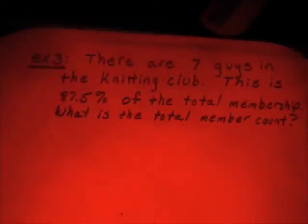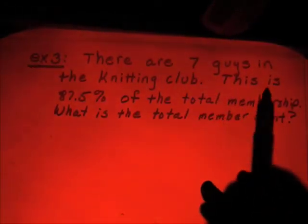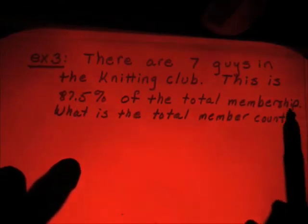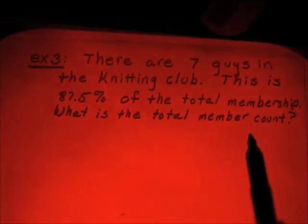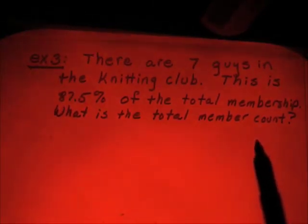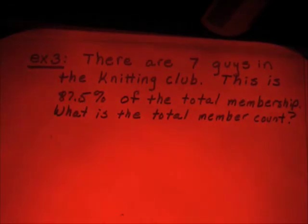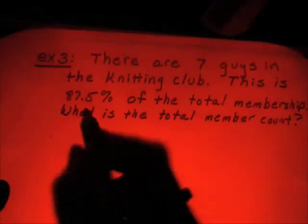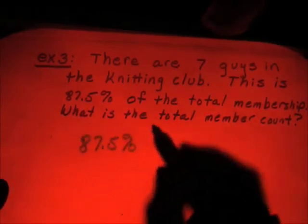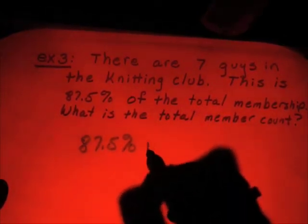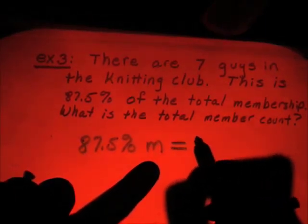Example three. This time we know the answer. It says there are seven guys in the knitting club. And this is 87.5% of the total membership. So we know the answer. We know the percent. But we don't know the total member count. We don't know how many people there are in the whole club. We just know that 87.5% is equal to seven. We don't know the original amount. But we know the percentage. So 87.5% of the total membership. I don't know the total membership. So I'm going to call that M. So 87.5% times M is equal to seven.